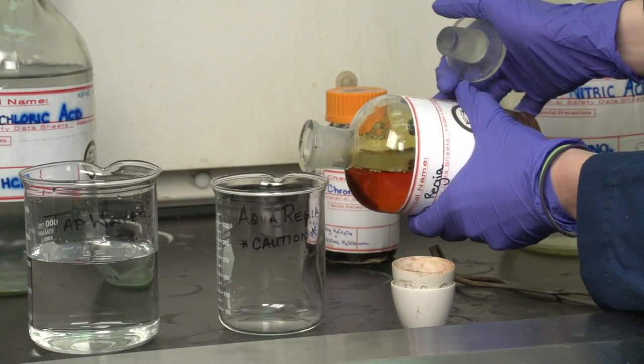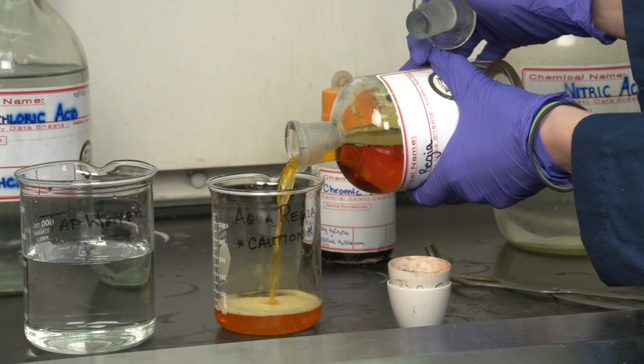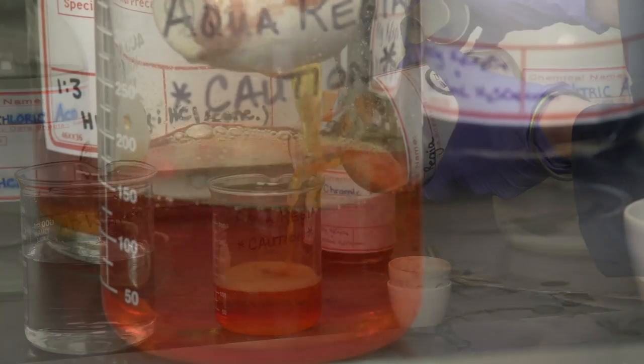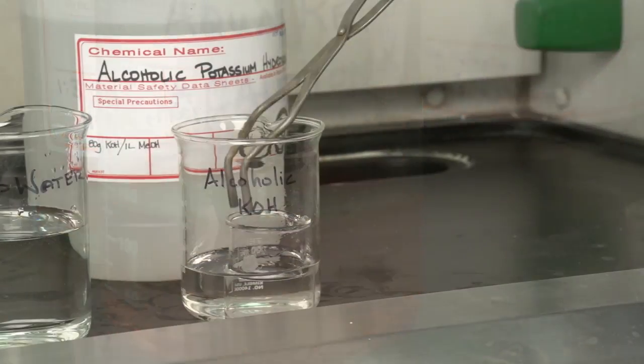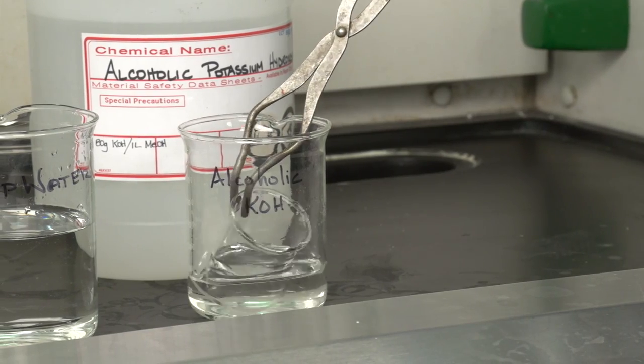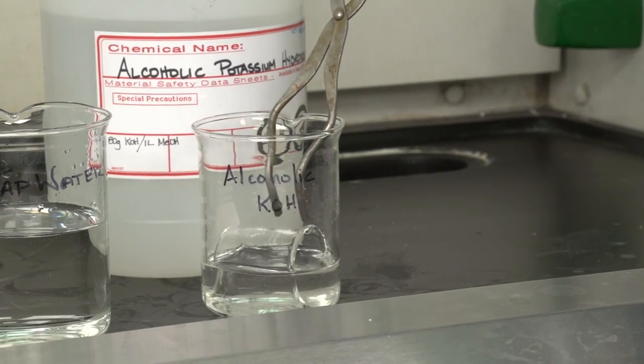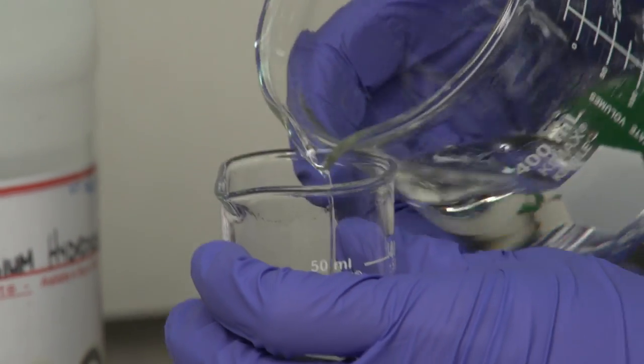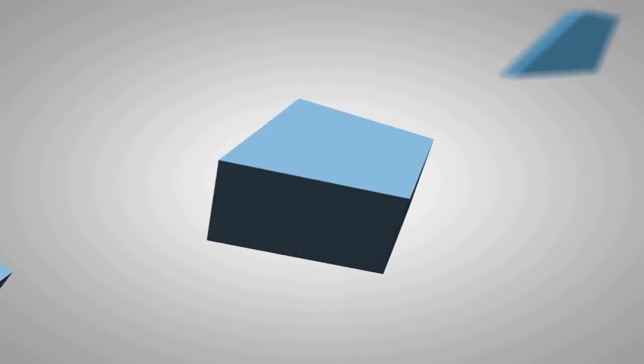Aquaregia is a mixture of three volumes of 12 molar hydrochloric acid with one volume of 16 molar nitric acid. Aquaregia can be used to remove stubborn inactive metals. Another common glassware cleaning agent is alcoholic potassium hydroxide, a solution of potassium hydroxide and ethanol. Alcoholic potassium hydroxide is used to remove organic materials from glassware.